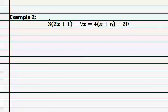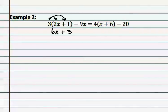Remember that distributing is multiplying. Therefore, we have 3 times 2x is 6x, 3 times a positive 1 is plus 3, and the 9x comes straight down because it is not inside the parentheses where the distribution occurs.